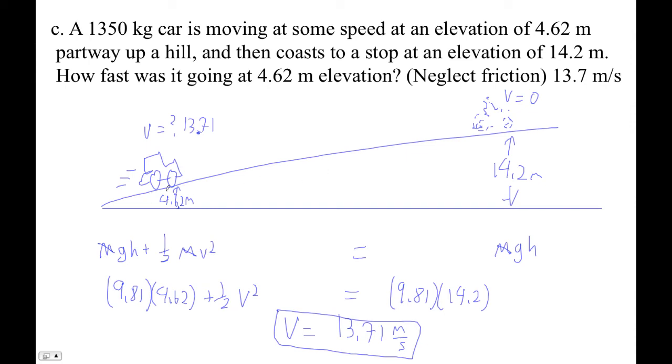Now if you wanted to do it as a one-to-one, you would just say, instead of this being height equals zero as I implied, I would just say this height here is 14.2 minus 4.62 - what is that? 9.58. So this height here is 9.58, and I would just say one-half mv squared equals mgh where h is 9.58.